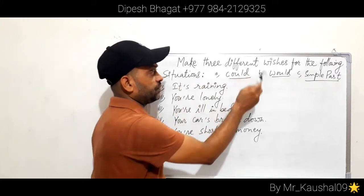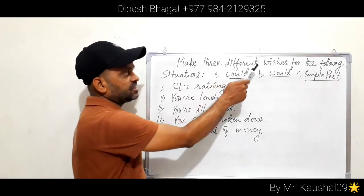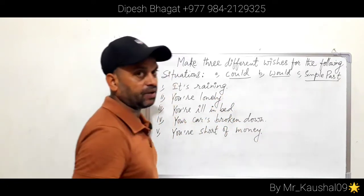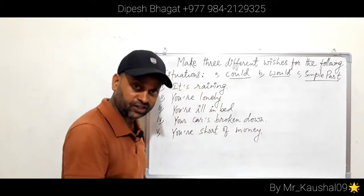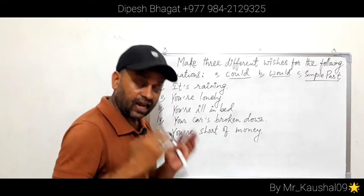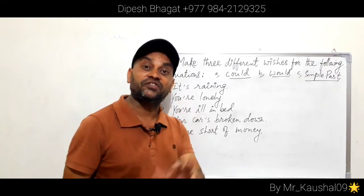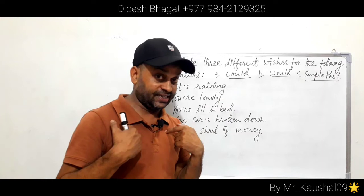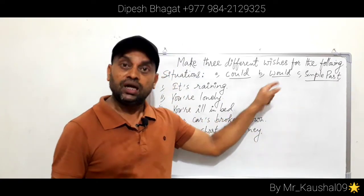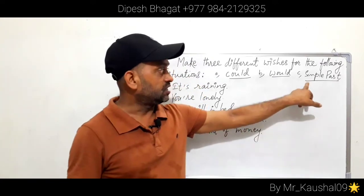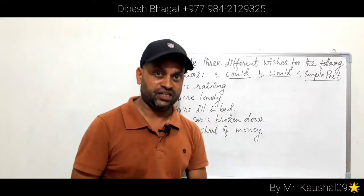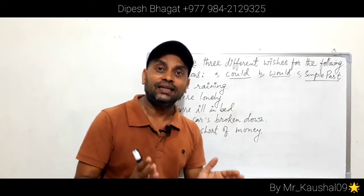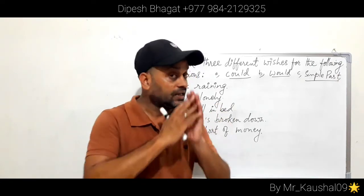Now let's see how questions are asked. Situations are given and you are instructed to make three different wishes for each situation using: (a) could, (b) would, (c) simple past. For the same situation you must make three different wishes using the three structures. Remember: in all cases, things are impossible — these are unreal wishes or imagination.